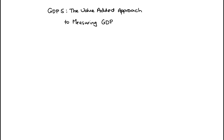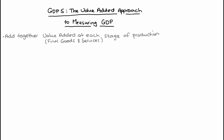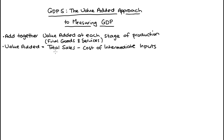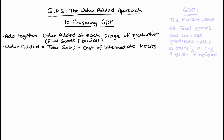Hi everyone. In this video I'm going to discuss the value added approach to measuring GDP, our gross domestic product. In a nutshell, in this approach we're going to add up the value added at each stage of the production of our final goods and services, where value added is defined as the difference between total sales and the cost of any intermediate inputs.